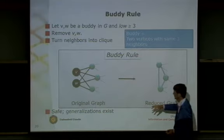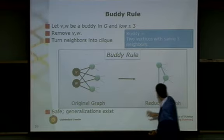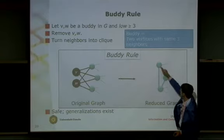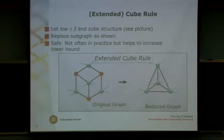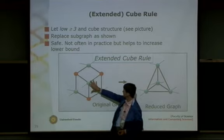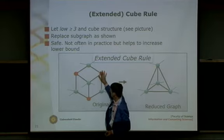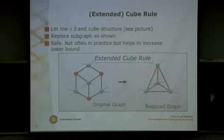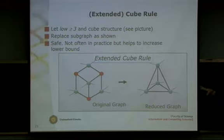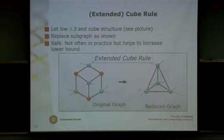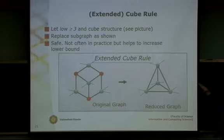From the work on recognizing tree width 1, 2, 3 there are other rules. One is the buddy rule: if I have two vertices of degree three with three common neighbors, I can remove these two vertices and make the three common neighbors into a clique — this is safe. There is also a cube rule: if you have a certain pattern in the graph you can replace it by another pattern. With these rules from Arnborg and Proskurowski you can always reduce any graph of tree width at most three to an empty graph, giving a very practical algorithm for tree width 1, 2, and 3.